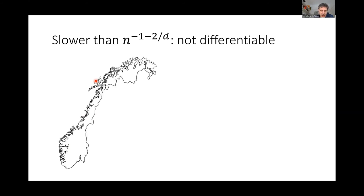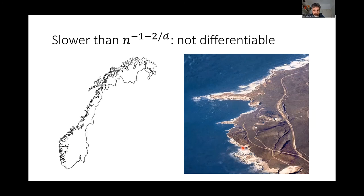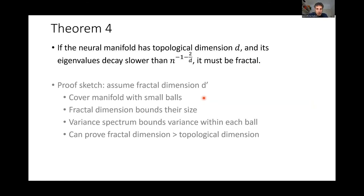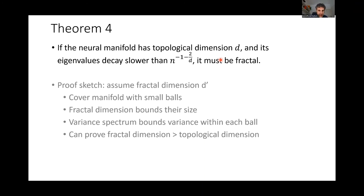What would it mean if this weaker bound is not obeyed? It means the population code is continuous but not differentiable. Functions that are continuous but not differentiable are called fractals. A good example is coastlines, which are approximately fractal — the finer details you go into, the more details you see, and that's why they're not differentiable. The final theorem tells us: if the neural manifold has topological dimension d and its eigenvalues decay slower than this bound, it must be a fractal.